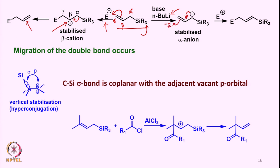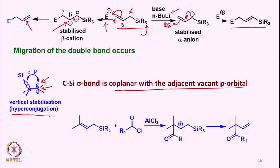The reason the beta carbocation is more stable is hyperconjugation between the carbon–silicon bond and the empty p orbital at the beta carbon where the carbocation forms after the electrophile reacts. This p orbital and the sigma bond of the carbon–silicon are coplanar with respect to each other, and therefore there is an overlap analogous to hyperconjugation.